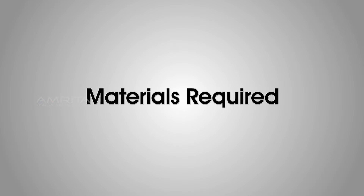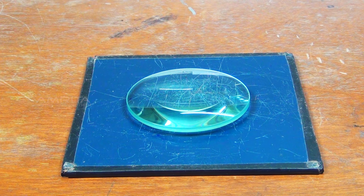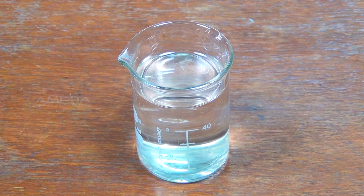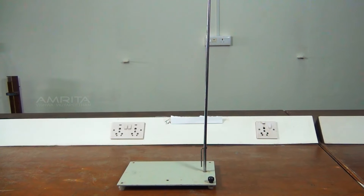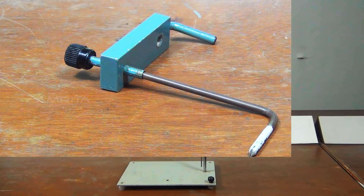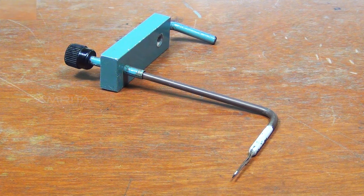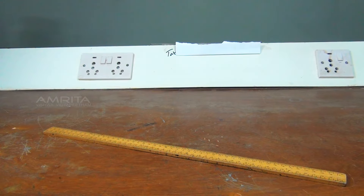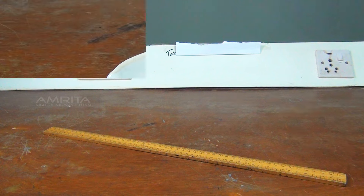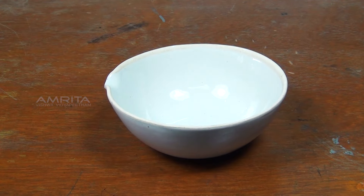Materials required: the given convex lens, the given liquid (water), plane mirror, retort stand, pointer, mercury, meter scale, and china dish.